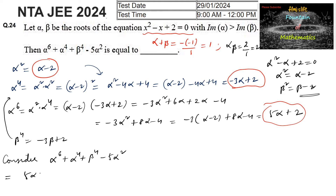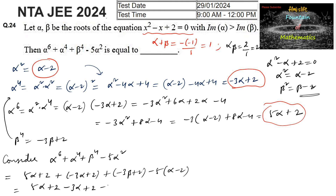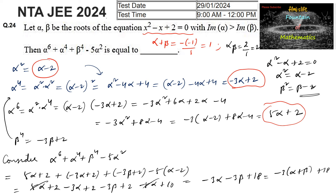Now substituting all values: alpha⁶ + alpha⁴ + beta⁴ - 5alpha² = (5alpha + 2) + (-3alpha + 2) + (-3beta + 2) - 5(alpha - 2). Simplifying: 5alpha - 3alpha - 5alpha cancels to give -3alpha, plus -3beta, and the constants are 2 + 2 + 2 + 10 = 16. This gives -3(alpha + beta) + 16, and since alpha + beta = 1, we get -3(1) + 16.